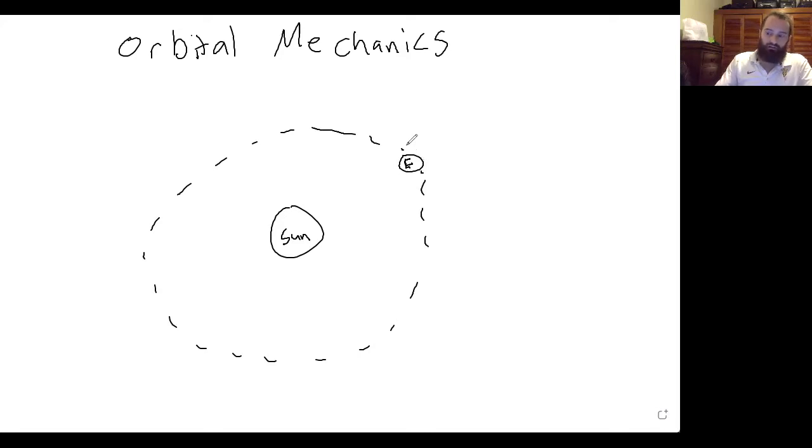But what makes the earth go in a circle instead of just going straight off into space? So this is an example of a force that is making the object change direction, but not necessarily making it change its speed. So there's a force of gravity pulling in this direction. And we know that the force of gravity is GMm over r squared. So the radius is this distance from the earth to the sun. M is the mass of the sun and m is the mass of the earth. G is the gravitational constant.